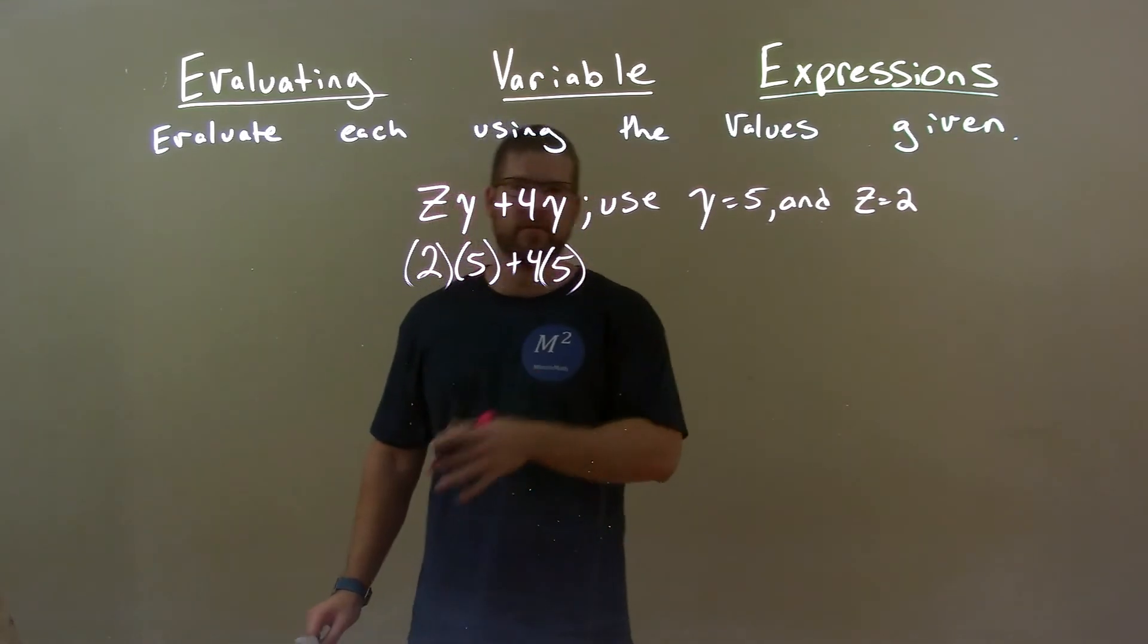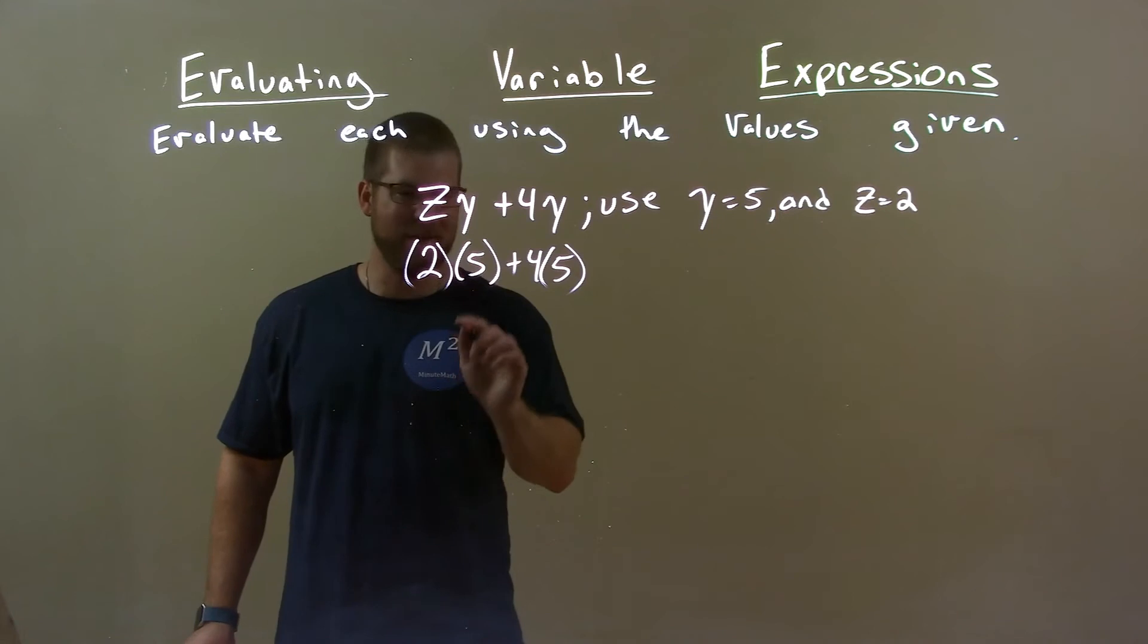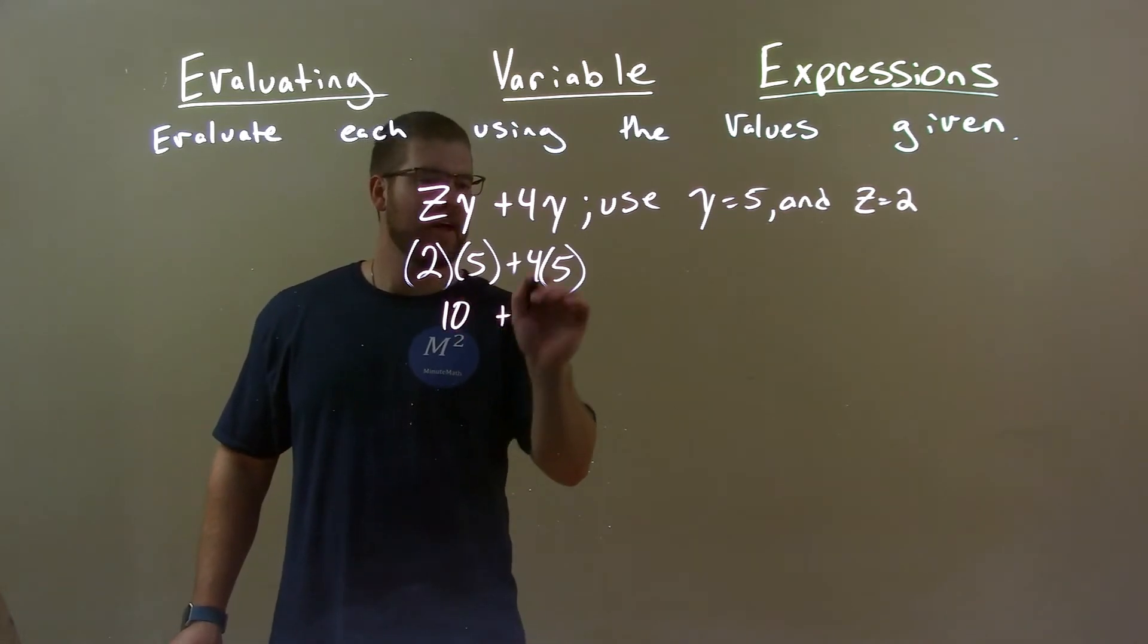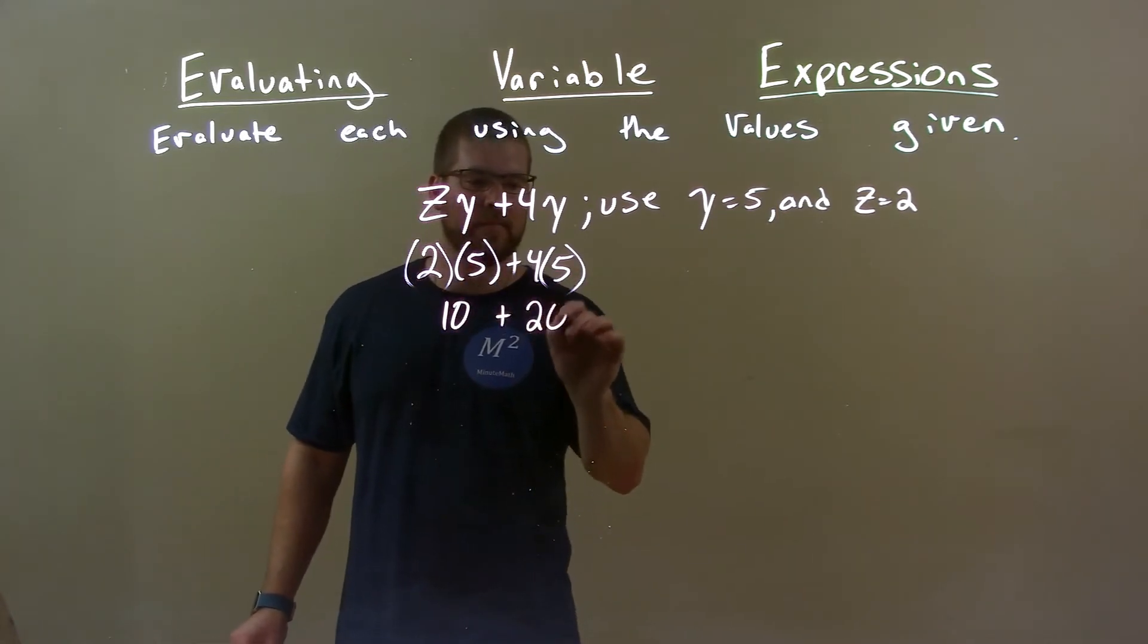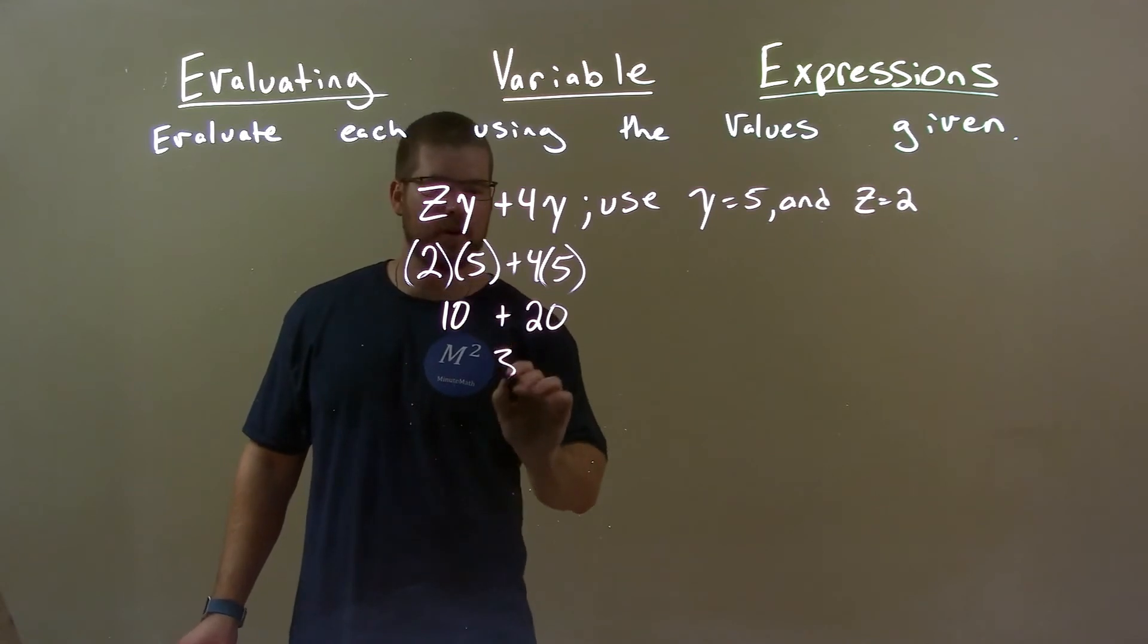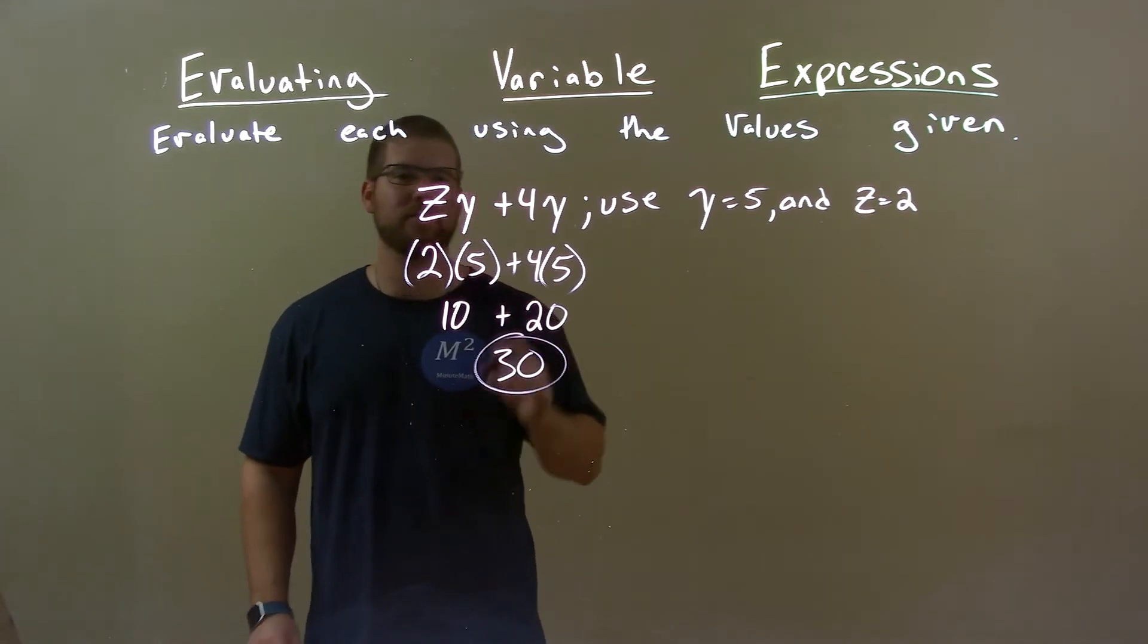All right, now it's time to simplify. 2 times 5 is 10 and 4 times 5 is 20. Now 10 plus 20 is 30, so the final answer here is just 30.